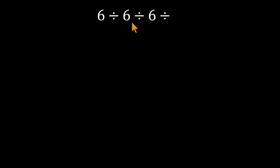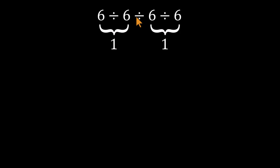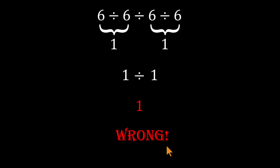Six divided by six, divided by six divided by six. At first glance, this feels almost boring, and that's exactly why it trips people up. Here's what most brains do automatically: they pair things up. Six divided by six is one, the other six divided by six is also one, and then they finish with one divided by one equals one. Clean, symmetrical, and confidently wrong.